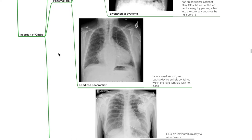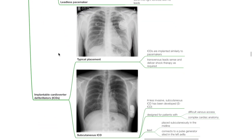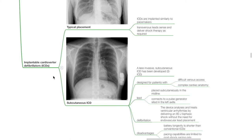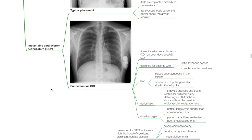Leadless pacemaker: this is a small sensing and pacing device entirely contained within the right ventricle with no leads. ICDs: typical placement involves ICDs implanted similarly to pacemakers, with transvenous leads that sense and deliver shock therapy as required. Subcutaneous ICD is a less invasive version designed for patients with difficult venous access or complex cardiac anatomy. The lead is placed subcutaneously in the midline and connects to a pulse generator sited in the left axilla. The device analyzes and treats ventricular arrhythmias by delivering an 80 J biphasic shock without endovascular lead placement. Disadvantages include shorter battery longevity than conventional ICDs, and pacing capabilities limited to post-shock pacing only.